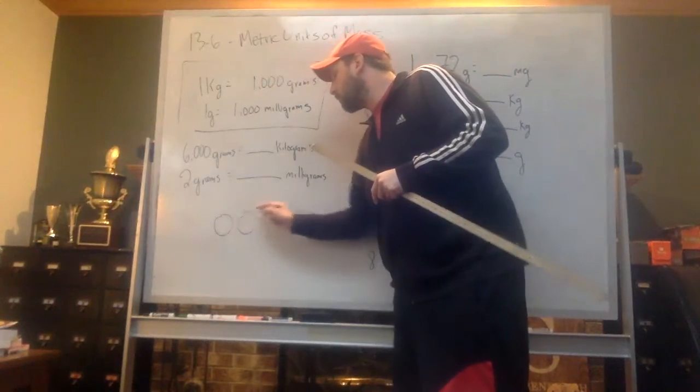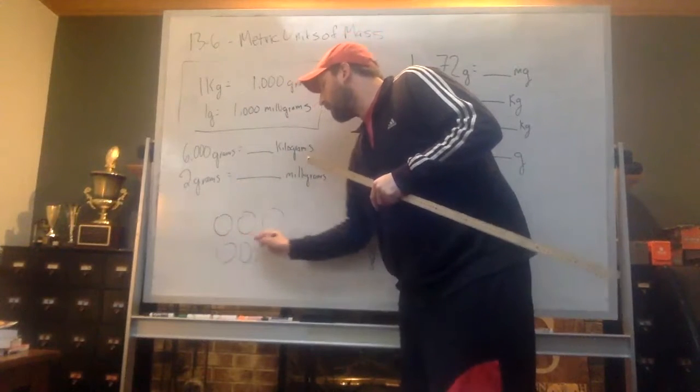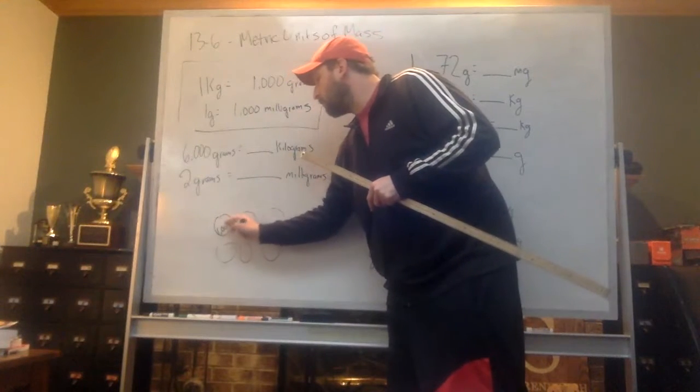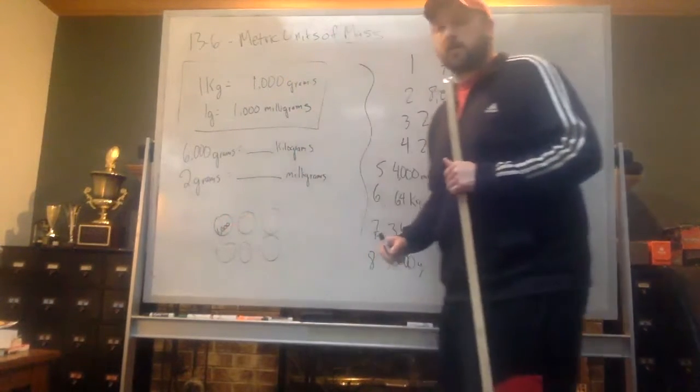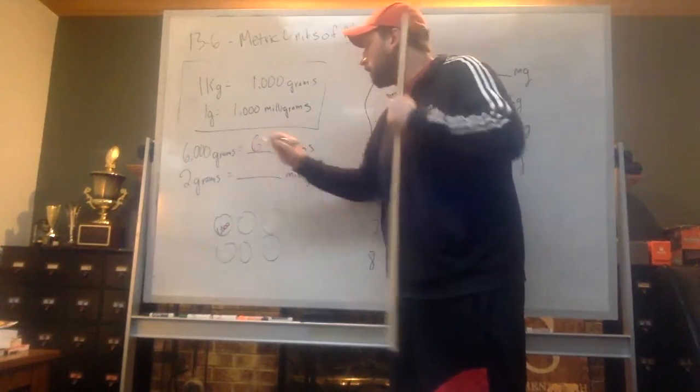So we have one, two, three, four, five, six. And each one has a thousand. And each of those thousands is going to be a kilogram. So there'd be six kilograms.